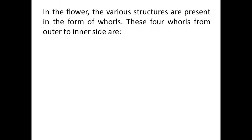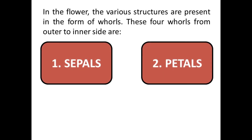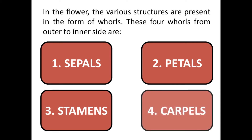In the flower, various structures are present in the form of whorls — different structures present in a circular form. These four whorls from outer to inner side are: first, sepals; second, petals; then stamens; and last, carpel. Now we will discuss them one by one.